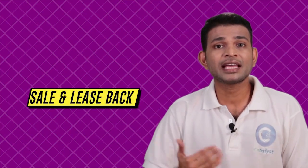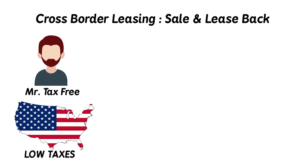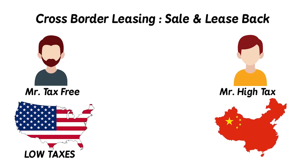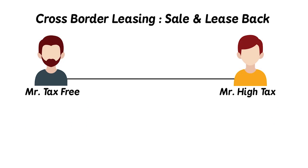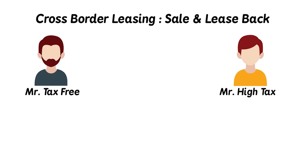Some countries define the term 'owner' from a strict legal perspective, whereas some countries define it from an economic usage perspective. Therefore, in such situations, both the lessor and the lessee could be recognized as owners in their respective countries, and both could claim depreciation as an expenditure. In some cases, cross-border lease transactions are entered into to take advantage of differences in the tax laws of various countries, and such arrangements are usually made in the form of sale and lease back transactions. For example, if Mr. Tax-free is located in a country with low taxes and Mr. High-tax is located in a country with high tax rates, they can enter into an arrangement in which Mr. Tax-free sells his asset to Mr. High-tax, who then immediately gives the asset back to Mr. Tax-free on lease.